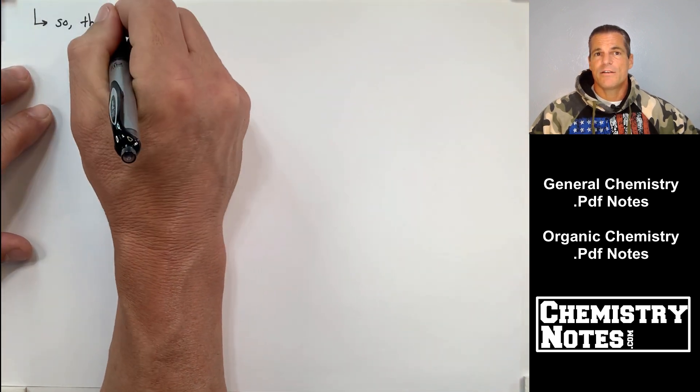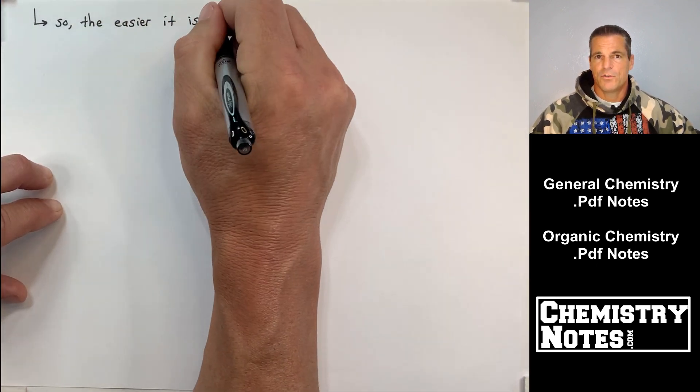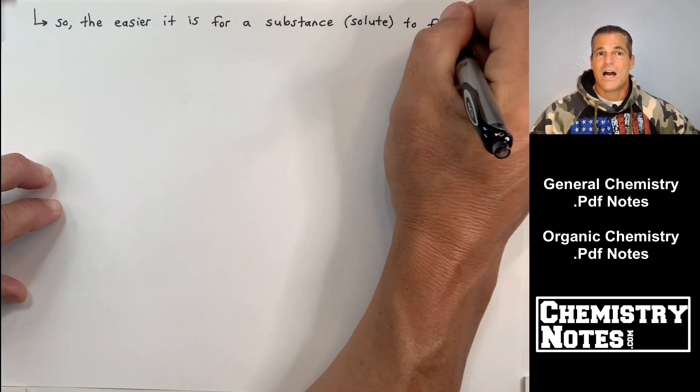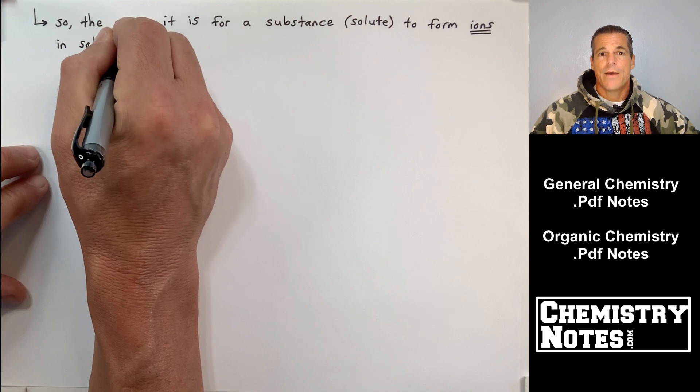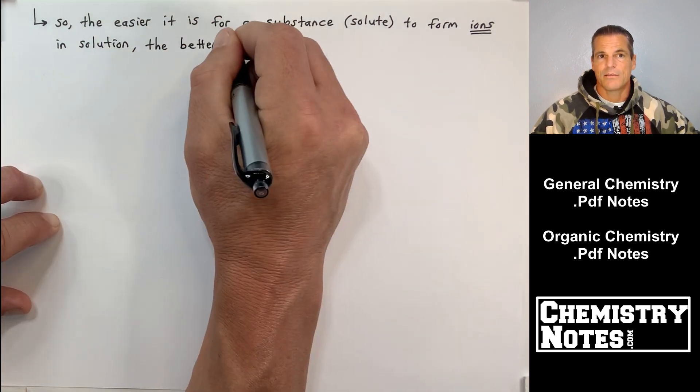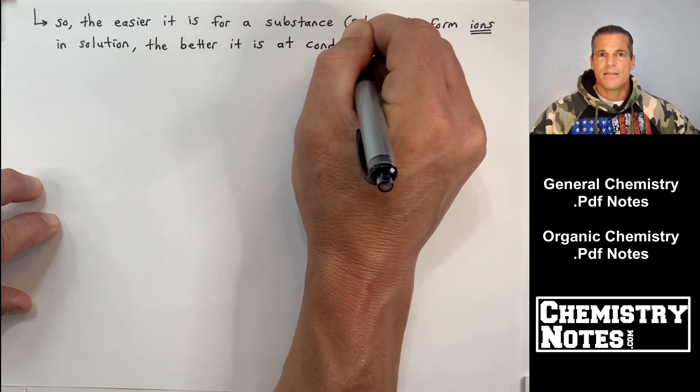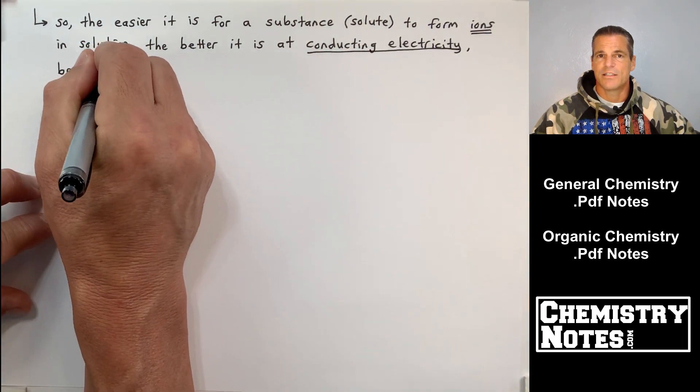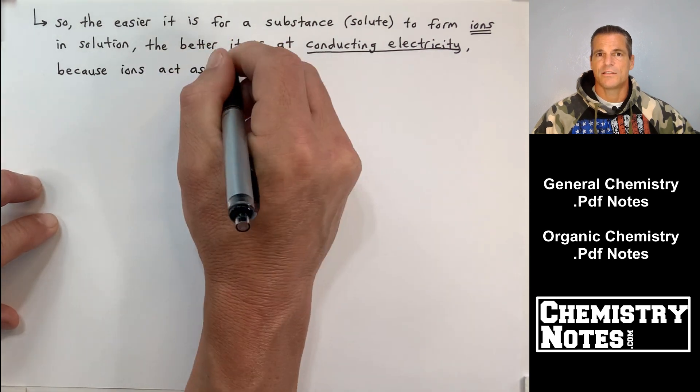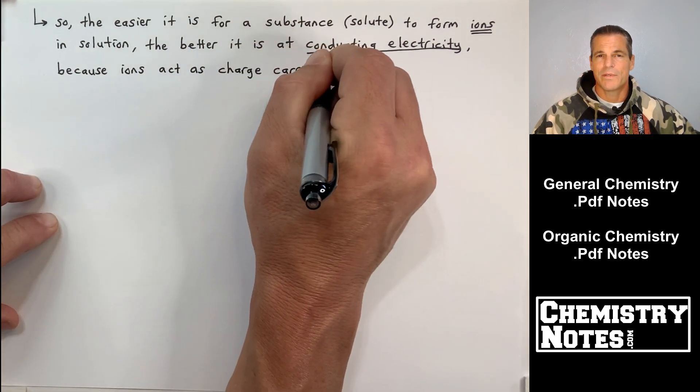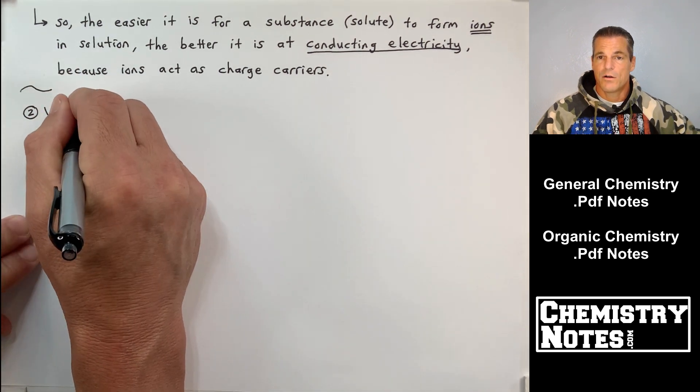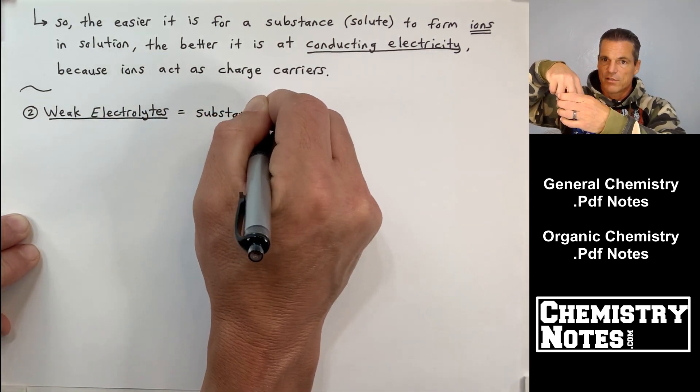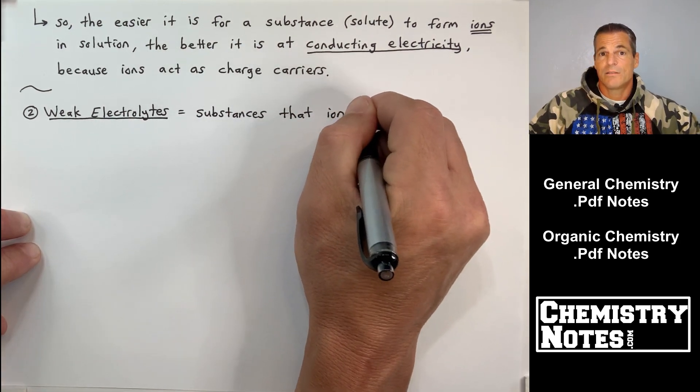So the easier it is for a substance or a solute to form ions when dissolved in water, the better it's going to be as an electrolyte. The easier it is for a substance or a solute to form ions in solution, the better it is at conducting electricity. Strong electrolytes conduct electricity really well, because there's so many ions dissolved.